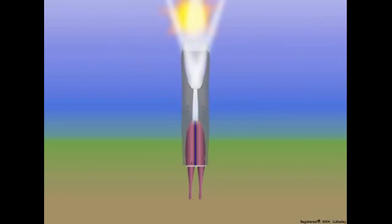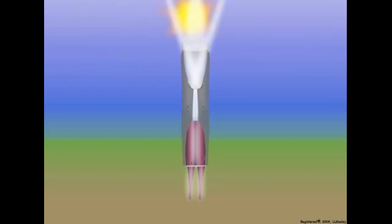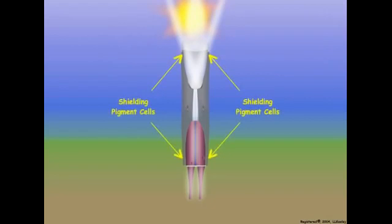Unlike photopic ommatidia, scotopic ommatidia are sensitive to the changes in light intensity that occur during the day and night cycles, and they detect light differently during the light and dark phases of the daily circadian cycle. During the daytime, when light is abundant, scotopic ommatidia detect light similar to photopic ommatidia. The shielding pigments in the secondary pigment cells of scotopic ommatidia absorb light rays that enter the corneal lens at an angle, and each ommatidium detects light independently of neighboring ommatidia, just as in photopic ommatidia.